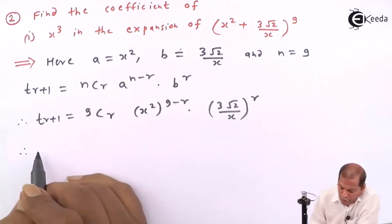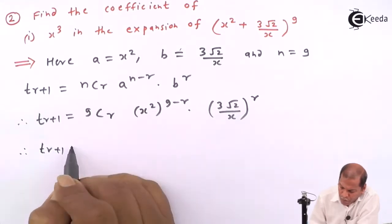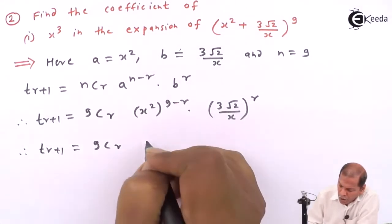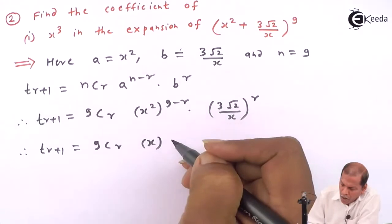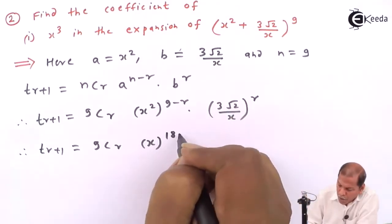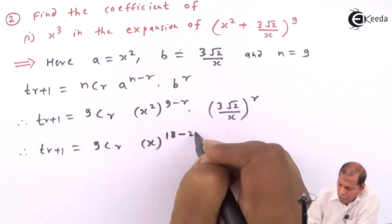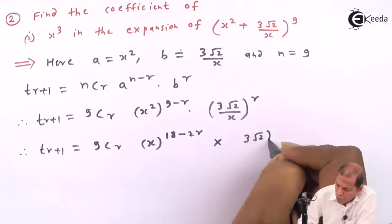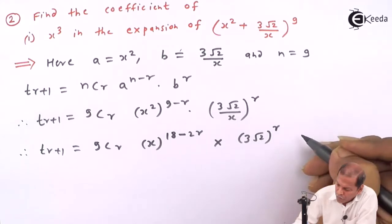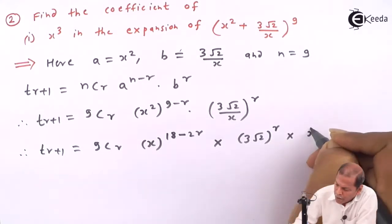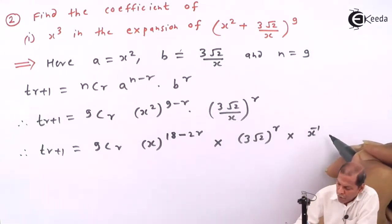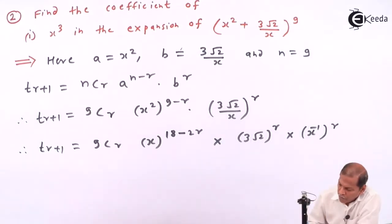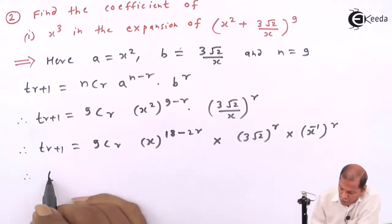The next step: T(r+1) is equal to 9Cr into x raised to 2(9 minus r), giving us x raised to (18 minus 2r), into (3√2) raised to r, and into x raised to minus r if we take x in the numerator, whole bracket raised to r.